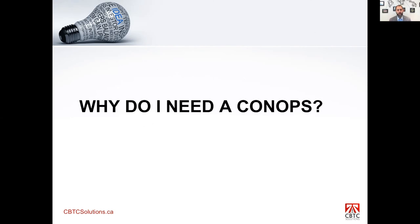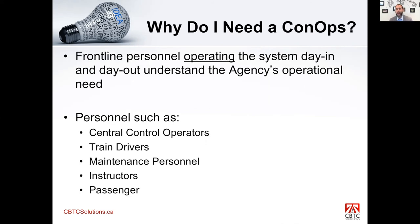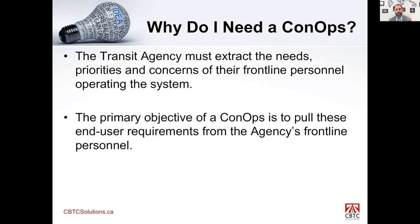Why do we need a CONOPS? Some transit agencies, when beginning to deploy a CBTC solution, assume that engineers understand their operational environment and dive right into writing a technical specification. This assumption is wrong, because engineers are not the frontline personnel dealing with issues day in and day out. Frontline personnel include central control operators, train drivers, maintenance personnel, instructors, and passengers — people using the system every single day. A transit agency needs to extract the needs, priorities, and concerns of these frontline personnel, and that is the primary objective of the CONOPS.